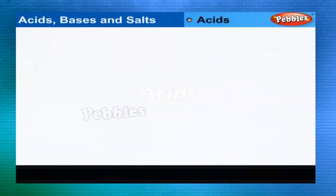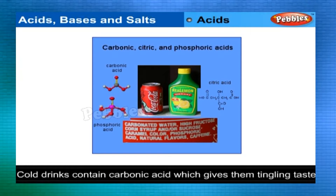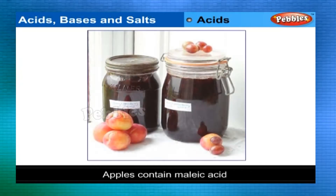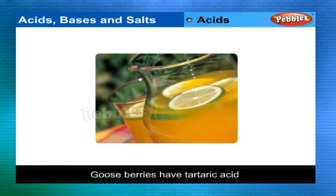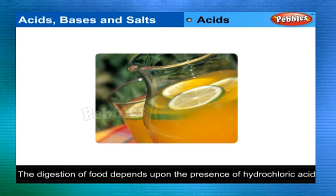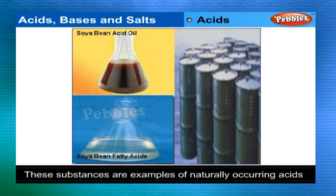Acids. The word 'acid' comes from the Latin word for sour, and the term was introduced in chemistry to name compounds which have a sour taste. Cold drinks contain carbonic acid, which gives them a tingling taste. Apples contain malic acid. Lemons, oranges and grapes contain citric acid. Gooseberries have tartaric acid. Even digestion of food in our body depends on hydrochloric acid. These are examples of naturally occurring acids.